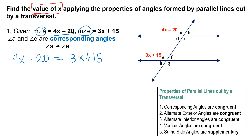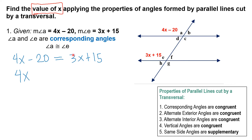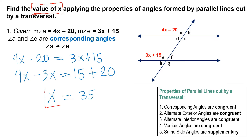Solving by combining like terms: transpose 3x to the other side — it becomes negative — and transpose negative 20, which becomes positive 20. So we have 4x minus 3x equals 15 plus 20, giving us x equals 35.